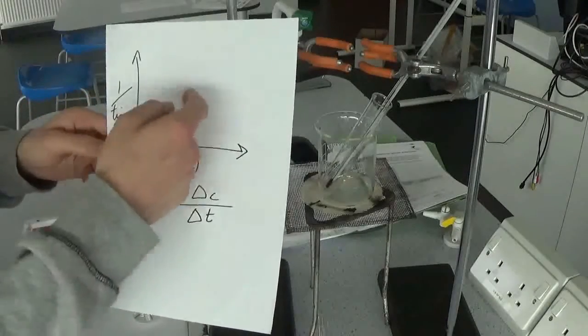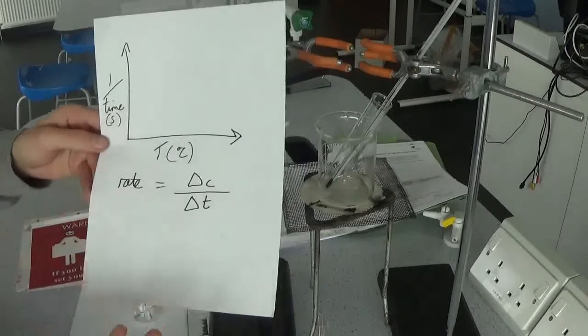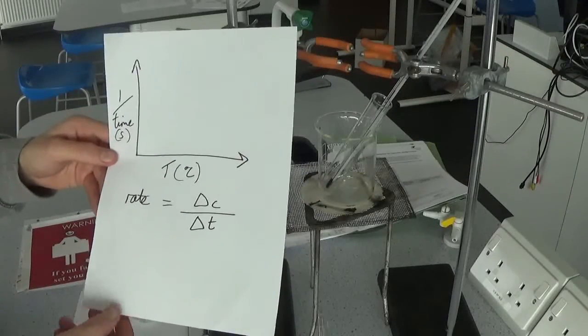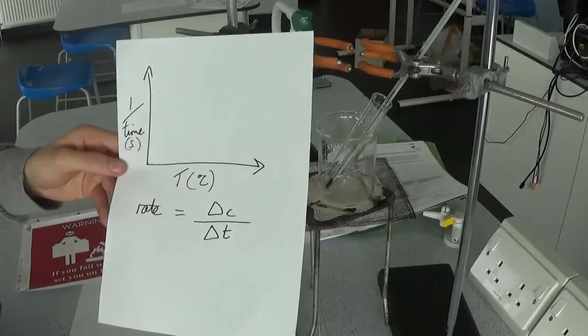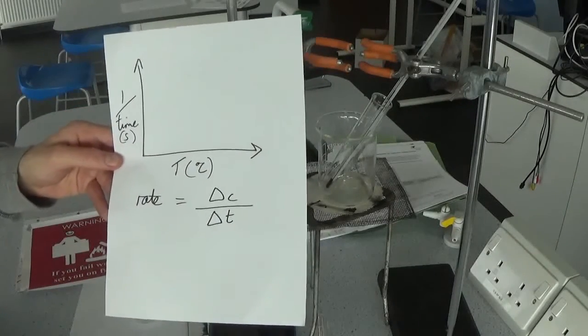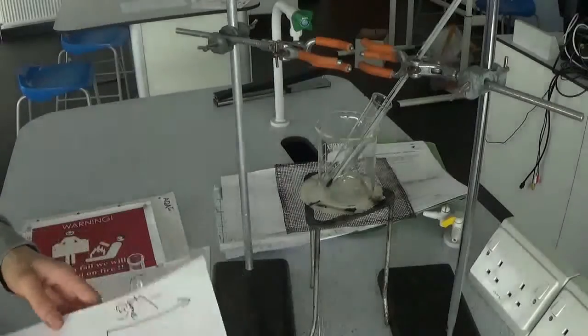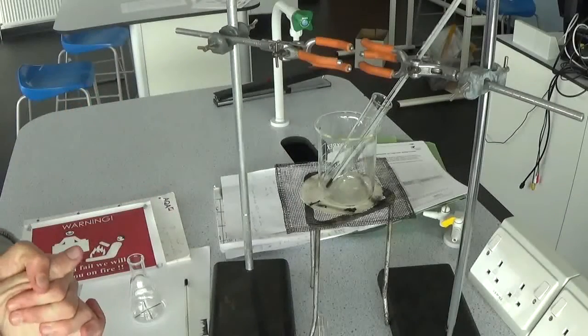So you would plot those against your temperature, and what you should quite clearly be able to see is that the higher temperatures would have a faster rate of reaction. That's it for required practical three.